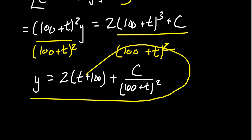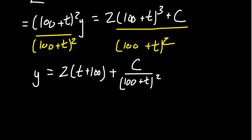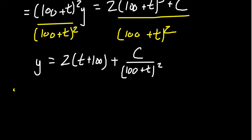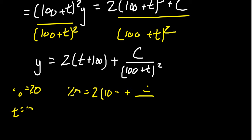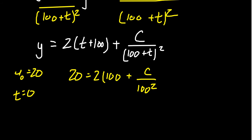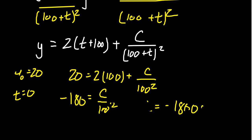Dividing both sides by (100 + T) squared, we get the general solution: Y equals 2(T + 100) plus C over (100 + T) squared. Now we apply the initial condition — we started with 20 pounds of salt when T equals zero. Plugging in: 20 equals 2 times 100 plus C over 100 squared. Subtracting 200 from both sides gives negative 180 equals C over 10,000. Multiplying both sides by 10,000, we get C equals negative 1,800,000.